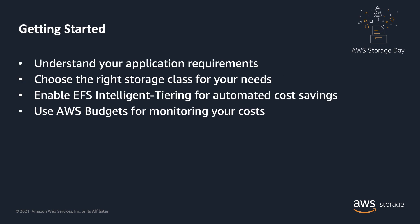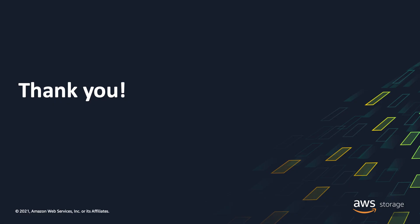To get started with optimizing costs on EFS, you should begin with understanding your application requirements and choosing the right storage class based on that. Then use lifecycle management to set the appropriate policy to enforce this choice. EFS Intelligent Tiering is the right choice for most of your applications running on EFS, unless you are very sure about your access pattern. Finally, use AWS budgets to monitor your costs and set alerts based on usage. Thanks for listening to this talk. I hope you took away some useful information about how to optimize your storage costs using the options available in EFS today, including the new feature we are launching today called EFS Intelligent Tiering.